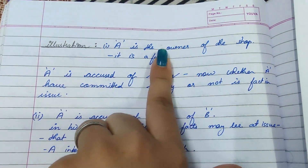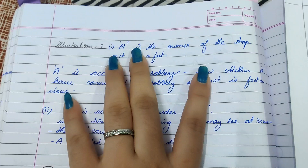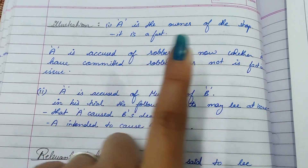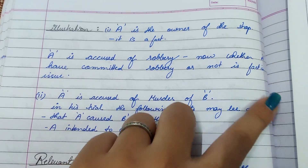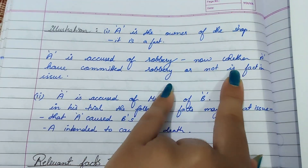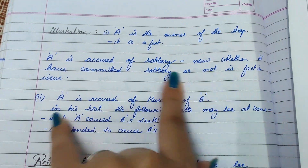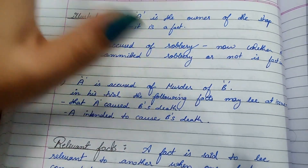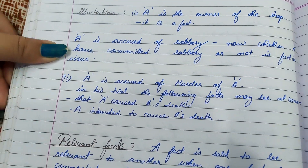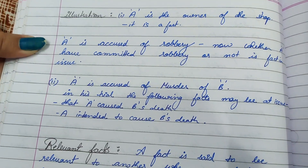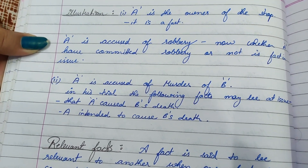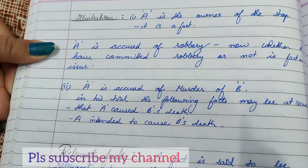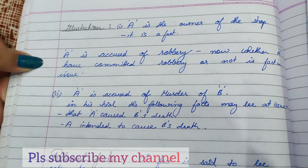Now, a few illustrations of facts in issue. First: A is the owner of a shop — that is an established fact. A is then accused of robbery. Whether A has committed robbery or not is the fact in issue, because it is not yet known whether A actually committed the robbery.